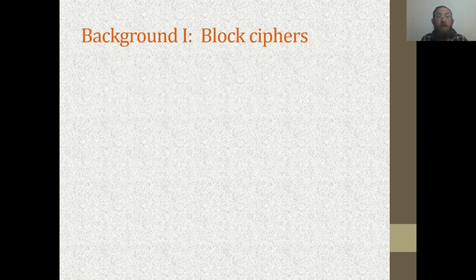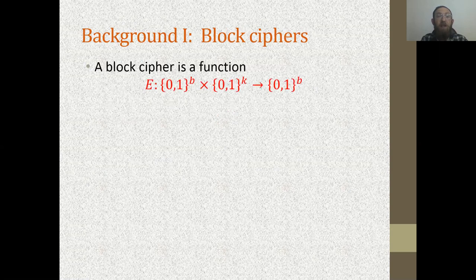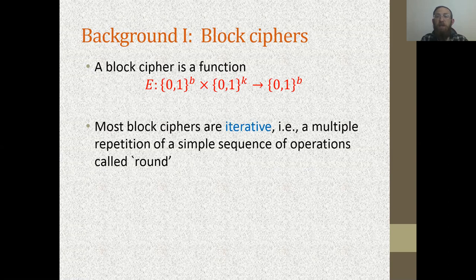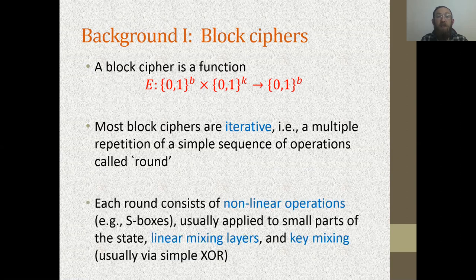Let's start with some background. A block cipher, the most widely used secret key primitive, is a function which receives a plaintext of b bits and a key of k bits, and returns a ciphertext of b bits. Most block ciphers today are iterative — they repeat a small sequence of operations called a round many times. Each round usually consists of some nonlinear operation applied on small parts of the state in parallel, like S-boxes, some linear mixing layer, and key mixing via XOR.